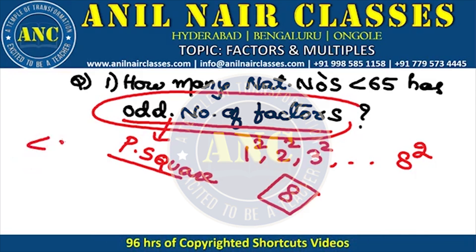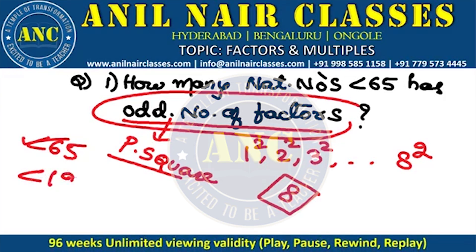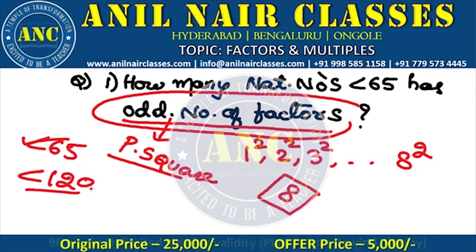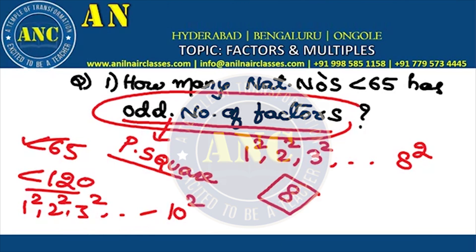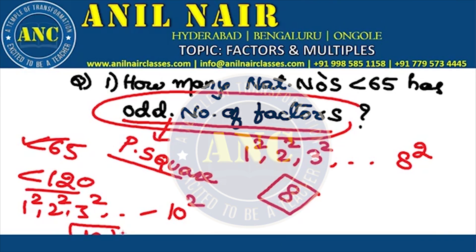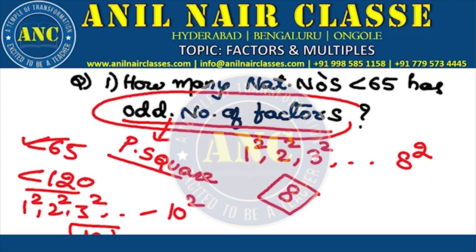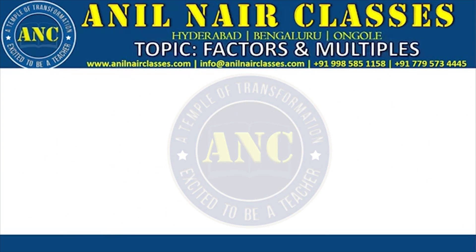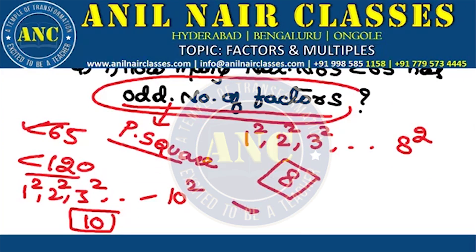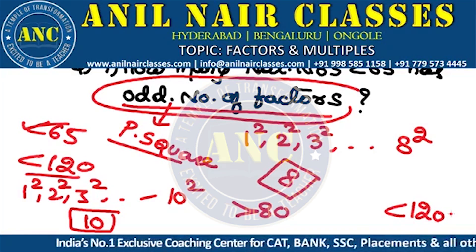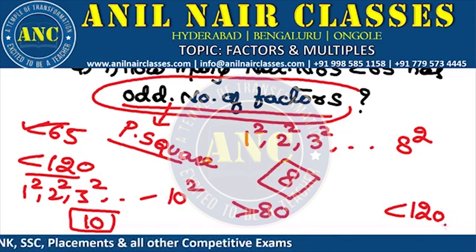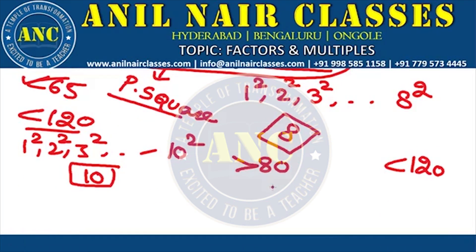Second question: instead of less than 65, if I replace it with less than 120, then 1², 2², 3² and so on up to 10² all qualify — 11² is 121, which exceeds 120. So the answer is 10. Now if I change it to: how many natural numbers greater than 80 and less than 120 have an odd number of factors — what will be the perfect squares in that range?